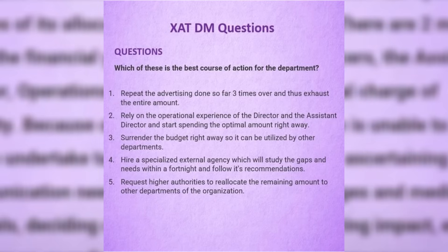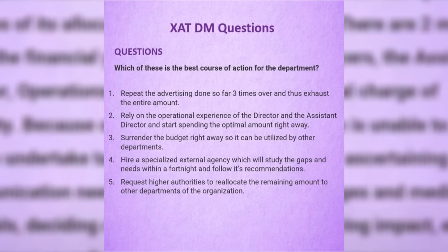Option 4 — hire a specialized external agency to study the gaps and needs within a fortnight and follow its recommendation. This is very practical: the associate director is happy, the director is happy because they get credible data, and the department is happy because the argument is resolved using an external agency. Option 5 — request higher authorities to reallocate the remaining amount to other departments — associate director is happy but the director is not, so this goes out. Option 4 is the correct answer. Importantly, this is not passing accountability — outsourcing to external experts is a very practical business decision, very different from avoiding responsibility.